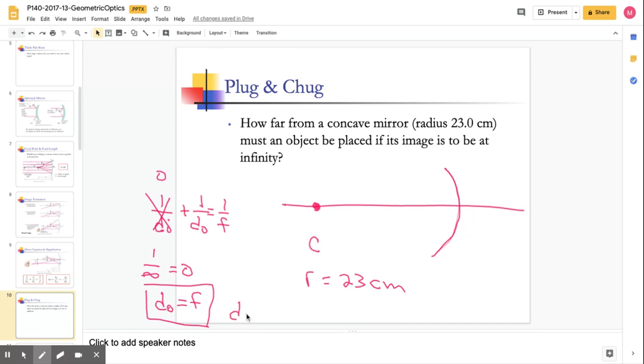And so, d then would be equal to r over 2. Because that's our focal distance. Right? f is equal to r over 2. So, f is equal to r over 2. And we want to place it at f. So, we would just place our object right here. And that's going to equal 11.5 centimeters.